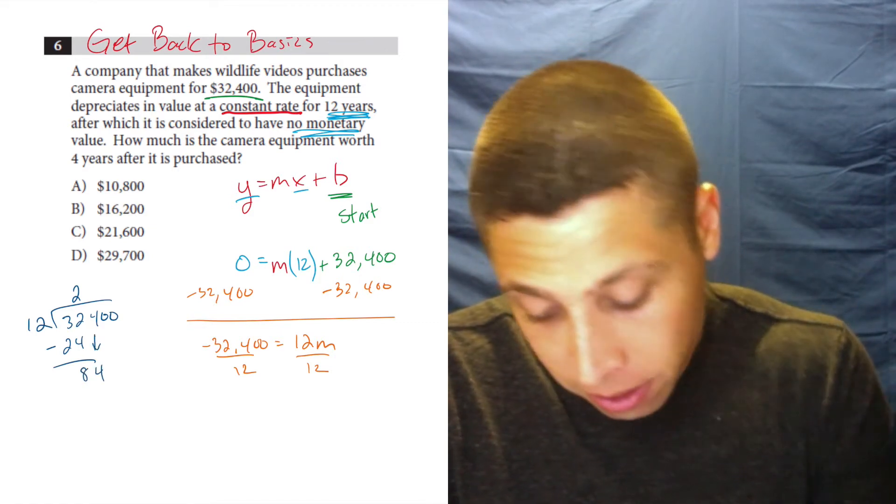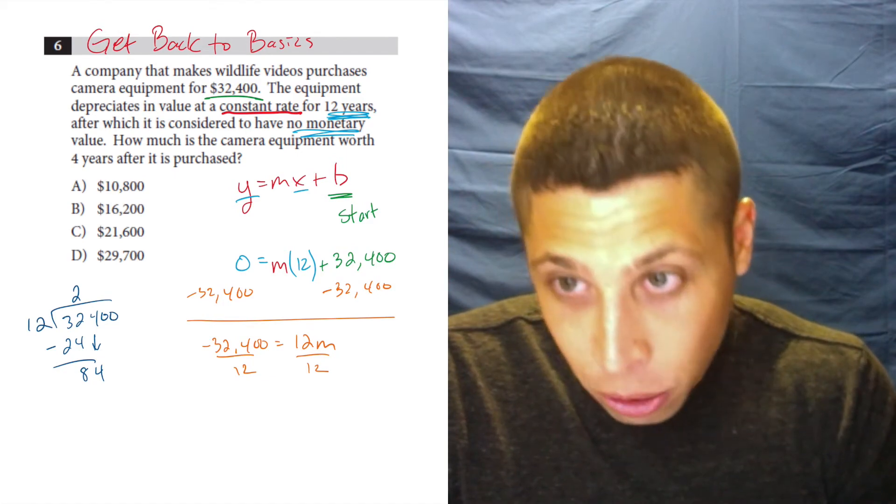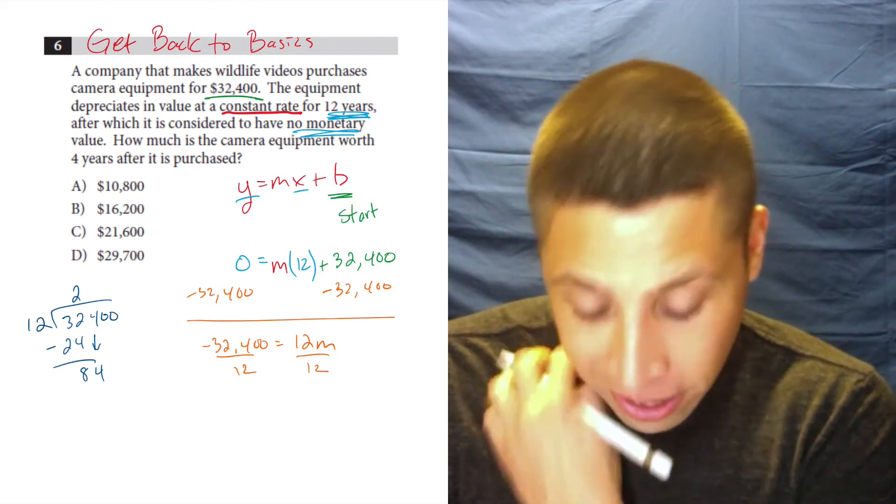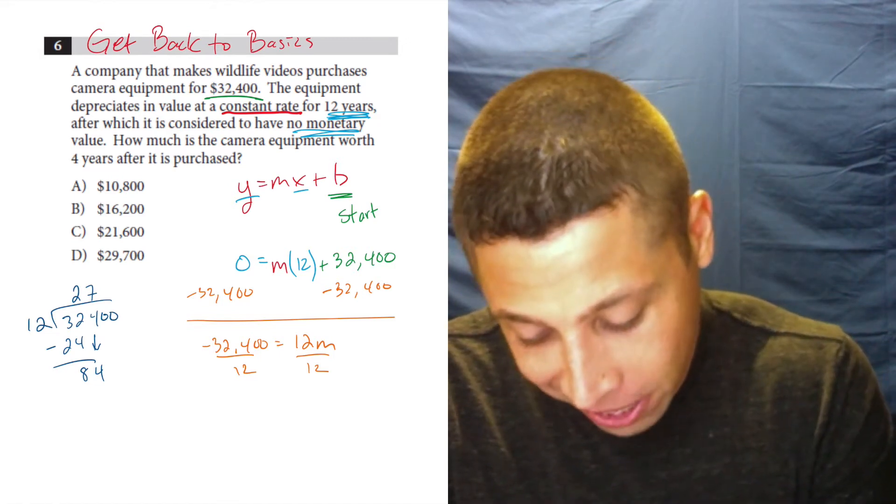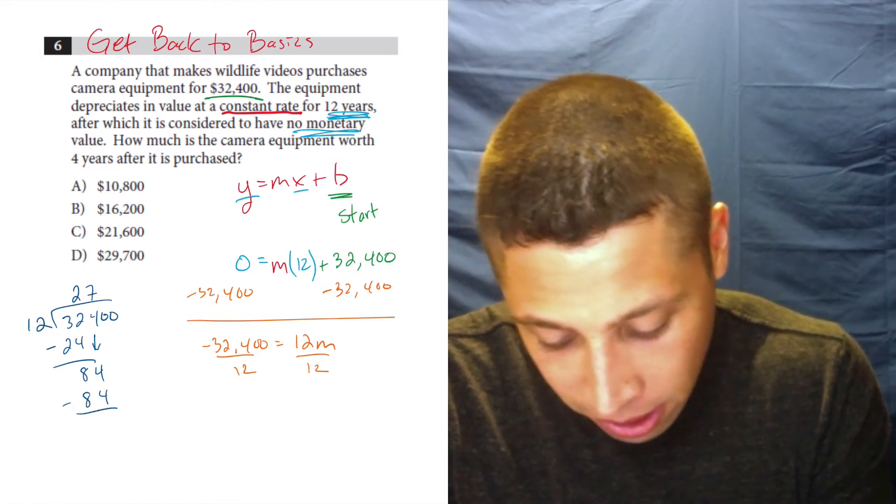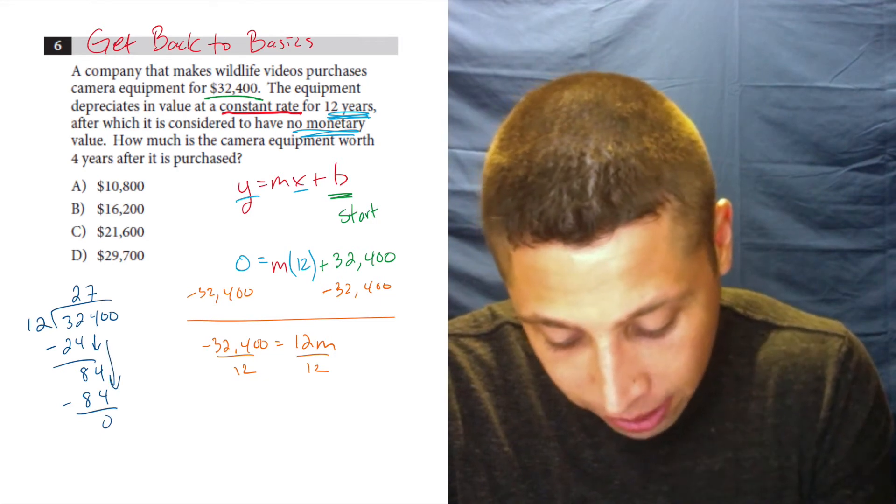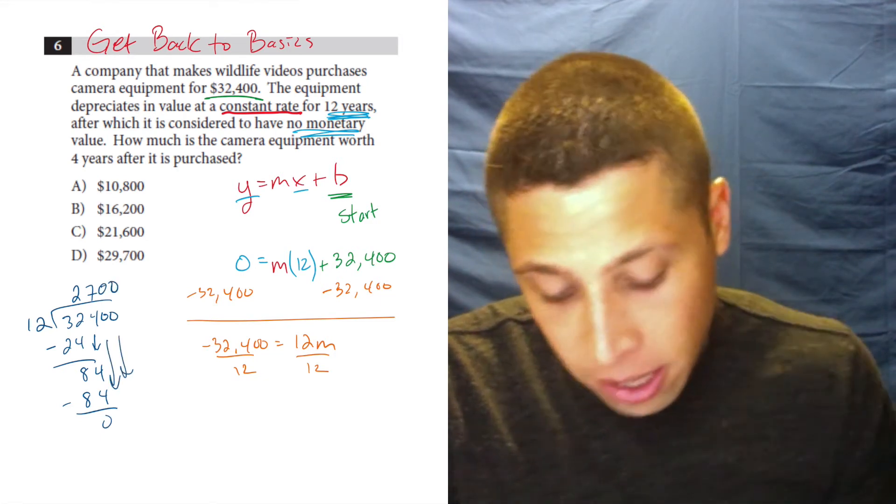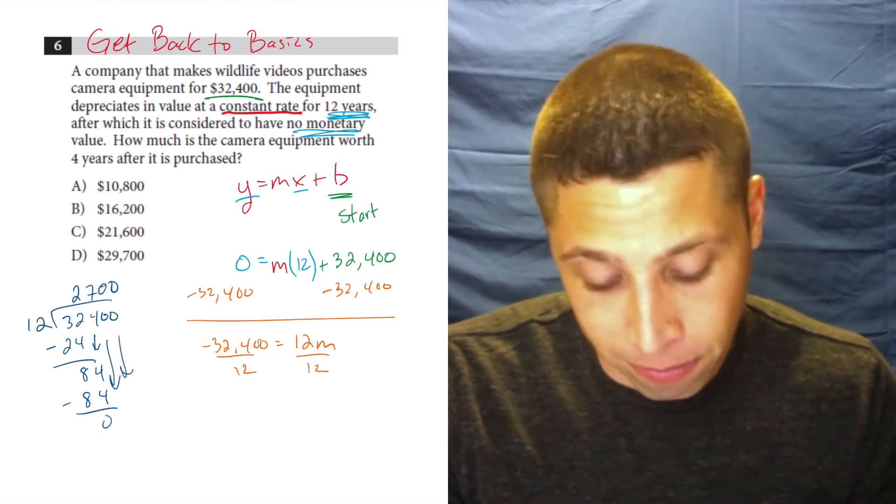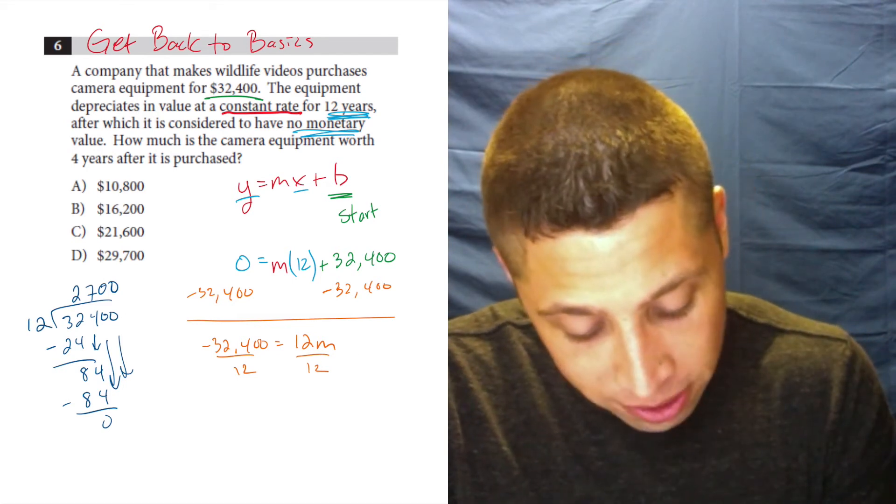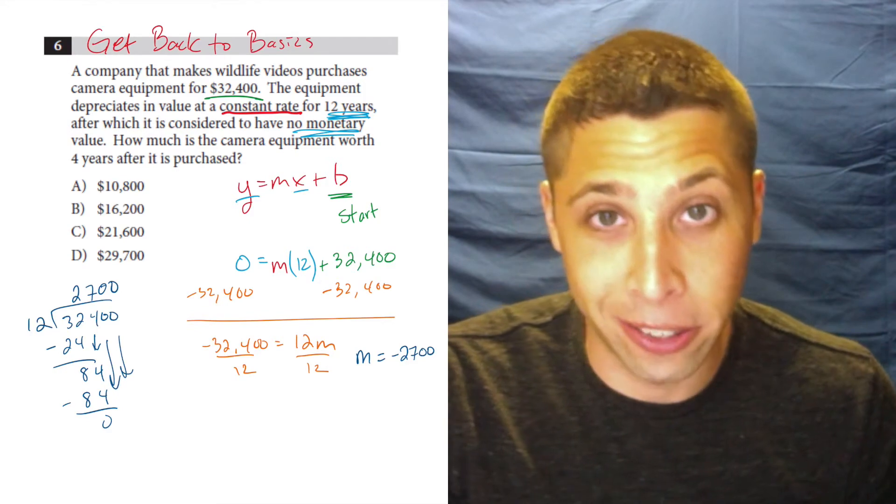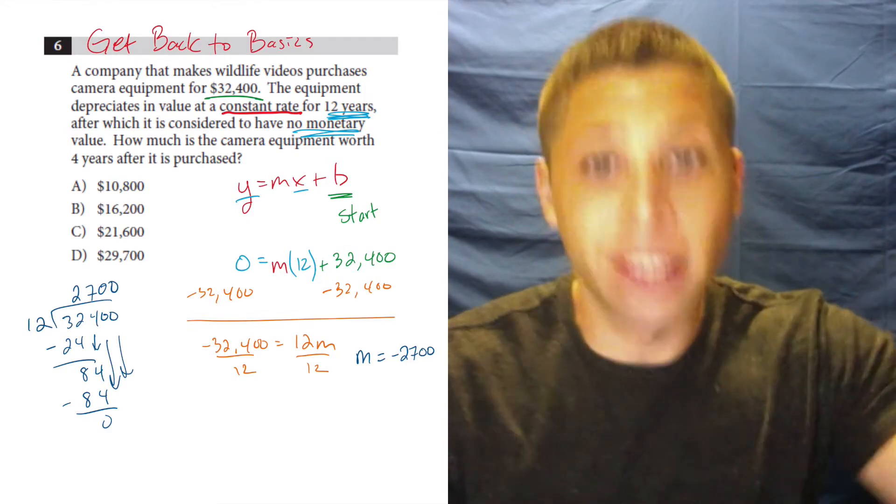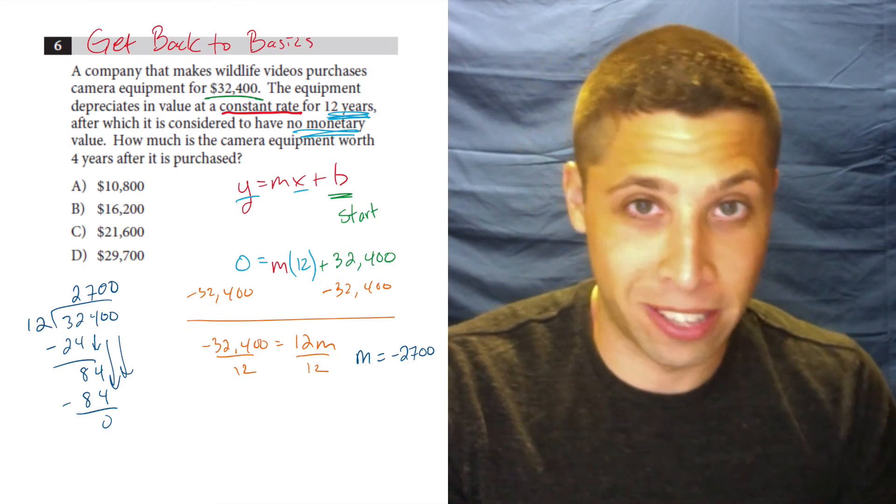Then we drop the four. And 12 goes into 84 seven times. We might need to count that in our heads, but there you go. Seven times 12 is 84. And so that's a zero, and then we've got some zeros dropping. So 2,700, and it's a negative. So what does this mean? This means that my slope is negative $2,700, meaning every year this thing is losing $2,700.